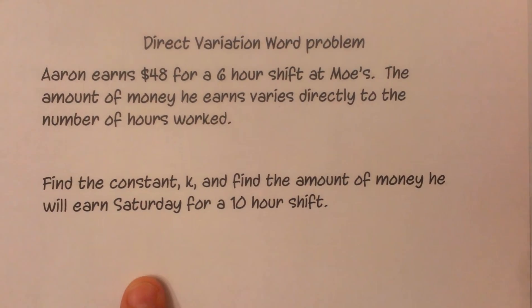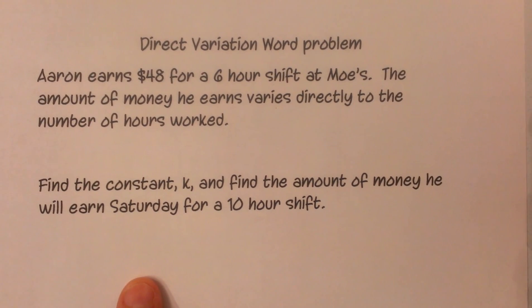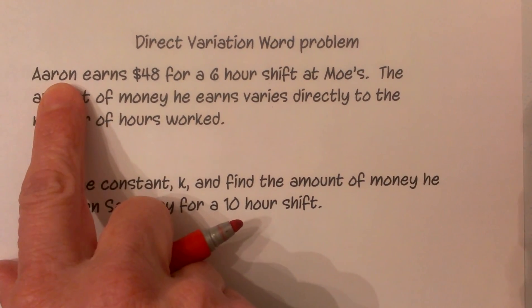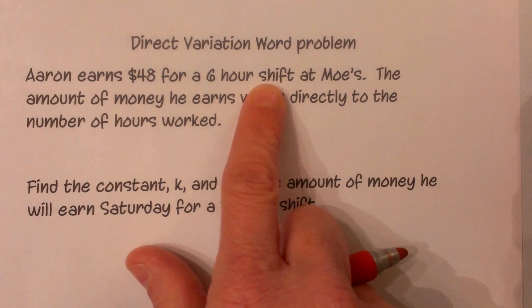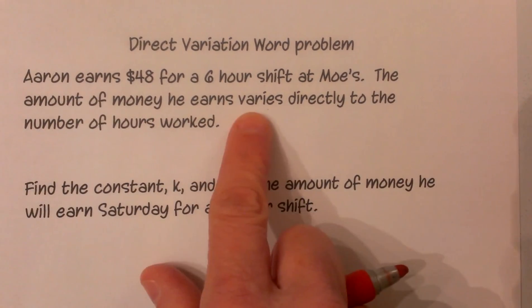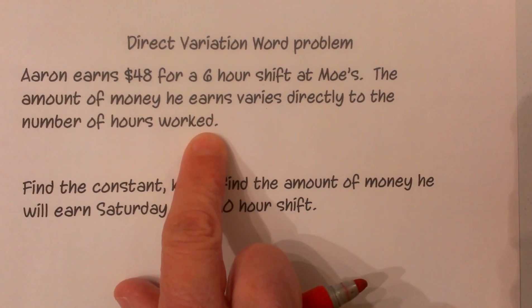Here is one that will speak to you about earning some money. Aaron earns $48 for a 6 hour shift at Moe's. The amount of money he earns varies directly to the number of hours he works.